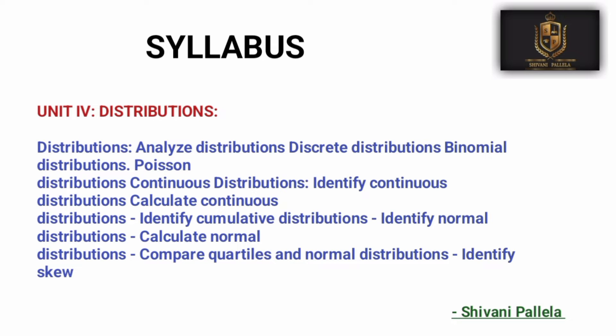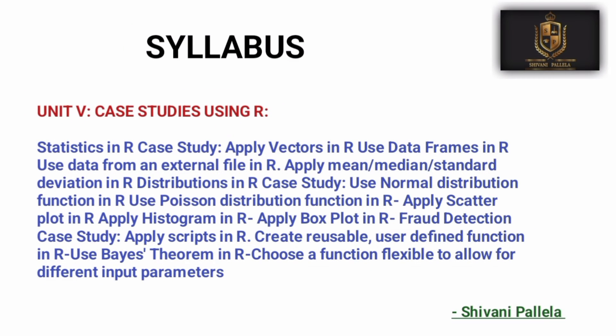Unit 4 covers distributions. You will have problematic questions here, such as continuous distribution, calculating quartiles, nominal distributions, and skewness. These are the types of questions you can expect in the examination.